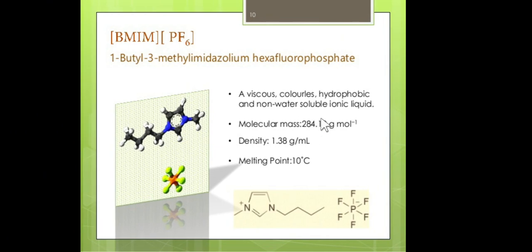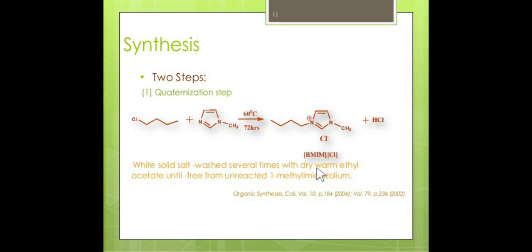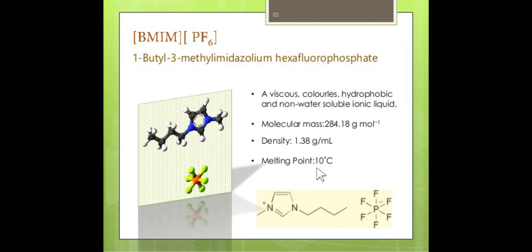Instead of Cl minus, you can use PF6 or BF4 minus as an anion. This kind of cations of imidazole are used for the preparation of ionic liquids. This ionic liquid is typically viscous, colorless, hydrophobic, and non-water-soluble. These are typical properties for ionic liquids.